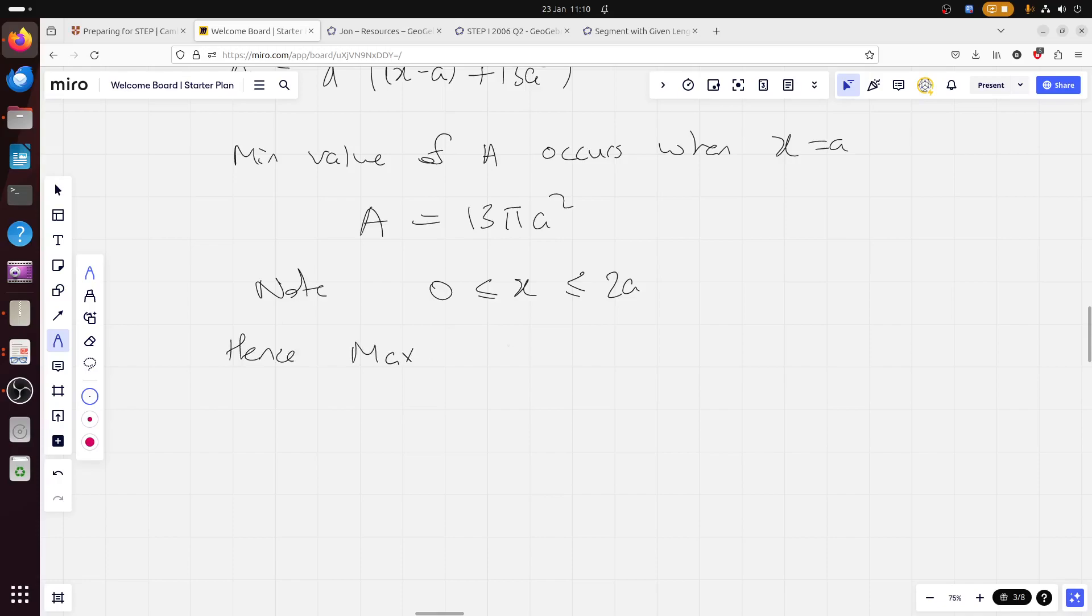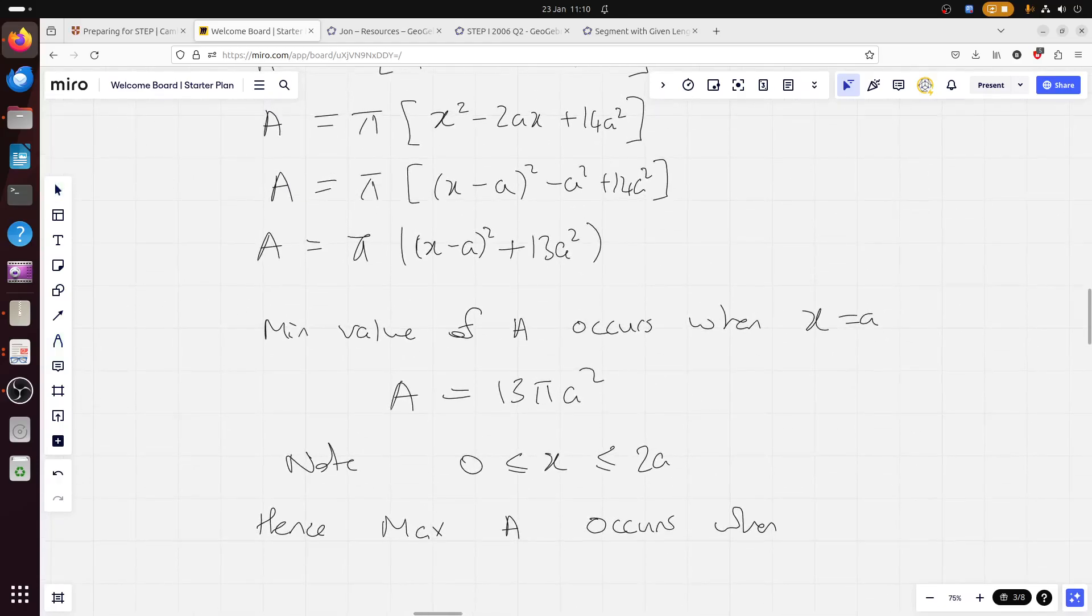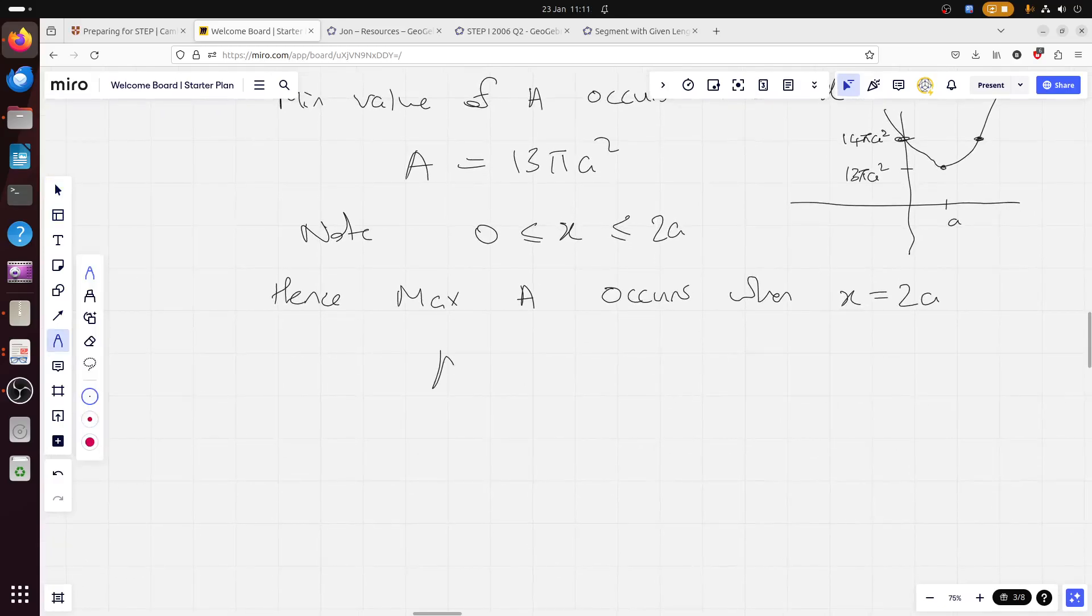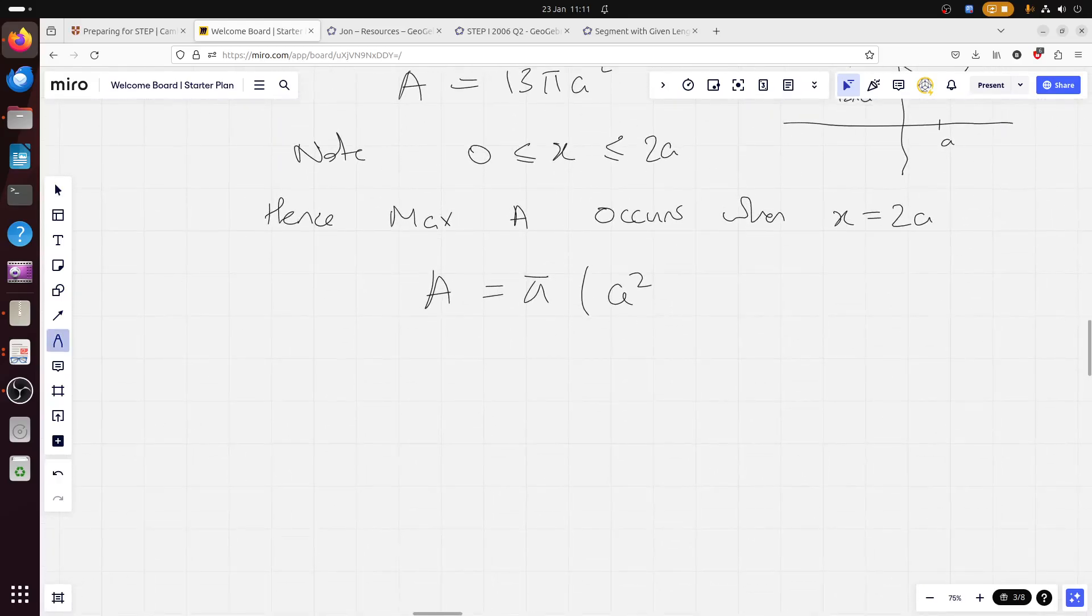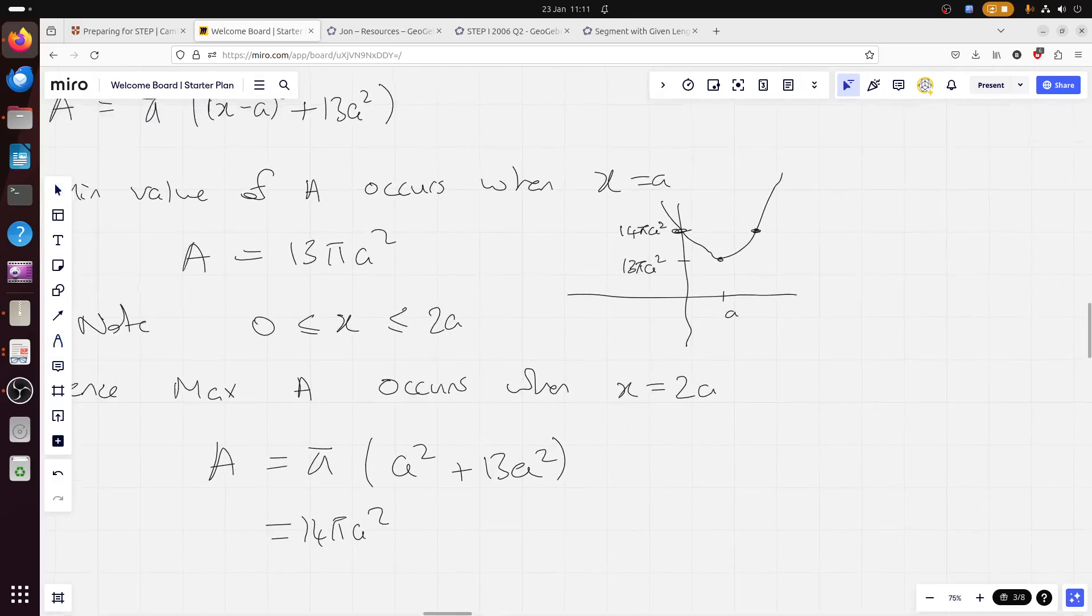Hence, max A occurs when... Probably easiest to see it, that x equals 2a here. I mean, this is the line of symmetry x equals a for the quadratic anyway, isn't it? So, obviously, it doesn't matter if you use 0 or 2a. What we're saying is when x is a, y is, what is it, 13 pi a squared. So, this is at 13 pi a squared. And then, it's just a typical quadratic. But we're saying at 0 and at 2a, it's going to have, well, you'll see in a second, 14 pi a squared. Because if we set x equal to 0 or 2a, you can use either. So, you're going to get area equals pi times 2a minus a, which is just a squared, plus 13a squared, which equals 14 pi a squared.